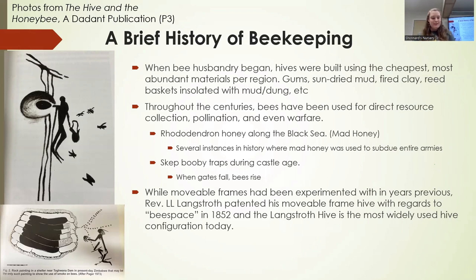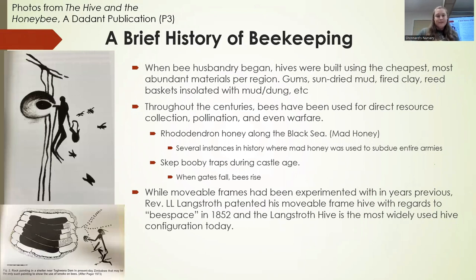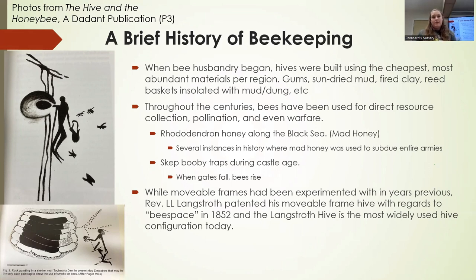Booby traps — during the medieval castle age, they would trap skep hives or reed basket hives so that when the gates fell, it would pull the hives over, all the bees would come out, and invaders would be attacked by angry honeybees. Moving way forward, L.L. Langstroth patented the movable frame with regards to bee space — a 3/8 inch measurement — in 1852, and that begins our modern history of beekeeping. The hives you see today, all your tall boxes, are Langstroth hives, and they're the most common hive used today.